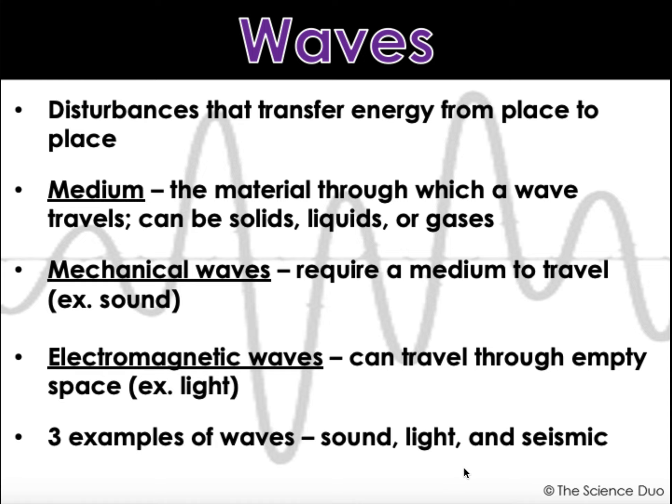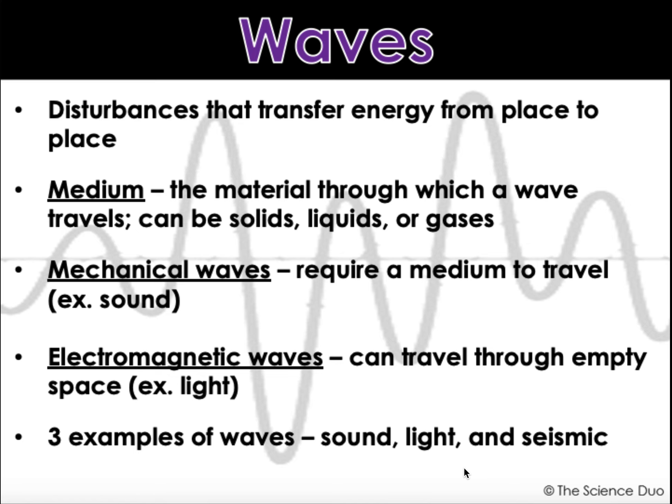However, there are also electromagnetic waves that can travel through empty space, such as light. Three examples of waves are light waves, sound waves, and seismic waves. We'll talk a little bit more about each of those.